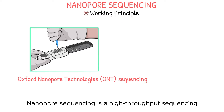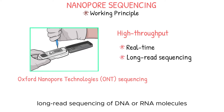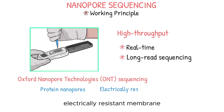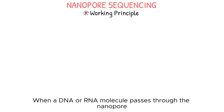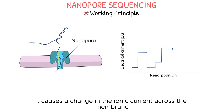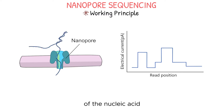Nanopore sequencing is a high-throughput sequencing technology that allows for real-time, long-read sequencing of DNA or RNA molecules. It is based on the use of protein nanopores embedded in an electrically resistant membrane. When a DNA or RNA molecule passes through the nanopore, it causes a change in the ionic current across the membrane, which can be measured and used to determine the sequence of the nucleic acid.